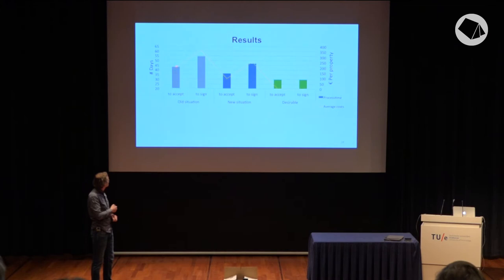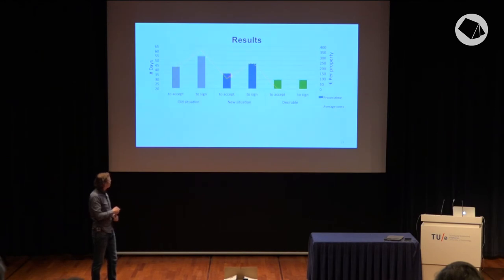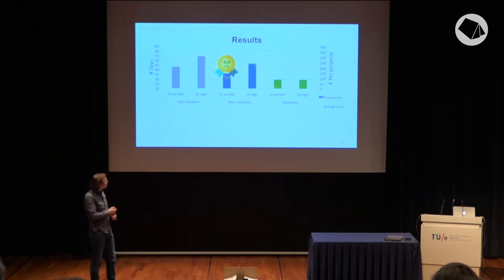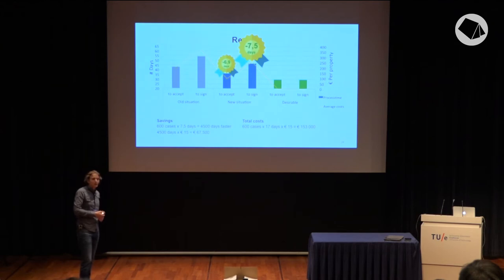So to summarize: in the old situation it was 43 days to accept and 54 days to sign the contract. Now it's 36 days to accept — almost seven days faster — and 47 days to sign the contract. We're still not at the desirable target, but it's better than before. They now save around 67,000 euros every month, because they don't have to wait an extra seven and a half days per property. However, there's still a total excess cost of around 150,000 euros still to overcome.